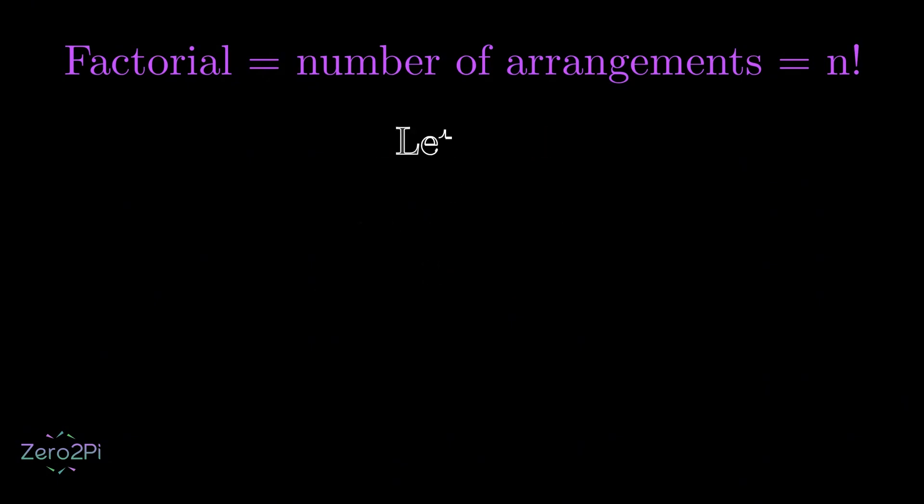Alright, now comes the real question. What if we don't have any letters? How many ways can we arrange letters on a shelf if we don't have any letters at all? And obviously, the answer is there's nothing to arrange and the shelf is going to remain empty. And surprisingly, that empty shelf itself is an outcome.